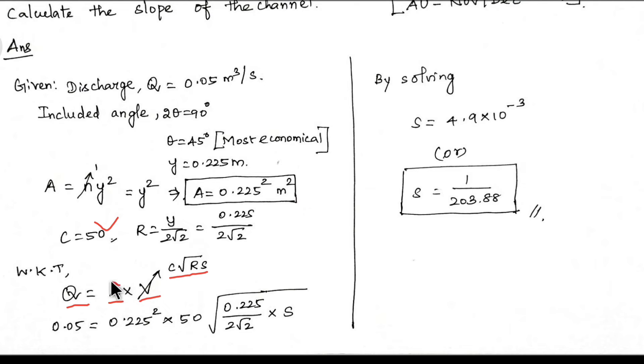Most economical triangular condition: Area equal to n y square. N value is 1, so only y square. Area equal to 0.225 m². Because y value is here, we will substitute here.